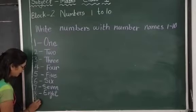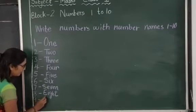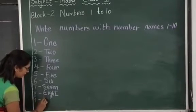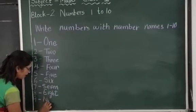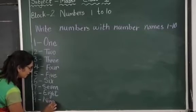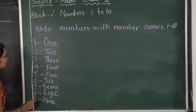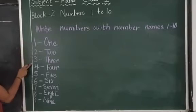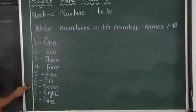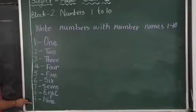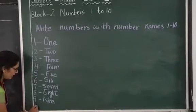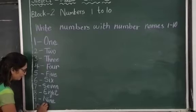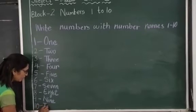After 8 comes 9. We write capital N — N, I, N, E — nine. After 9, children, let's count: 1, 2, 3, 4, 5, 6, 7, 8, 9. After 9, which number comes? 10. We write 10 — T, E, N — ten.